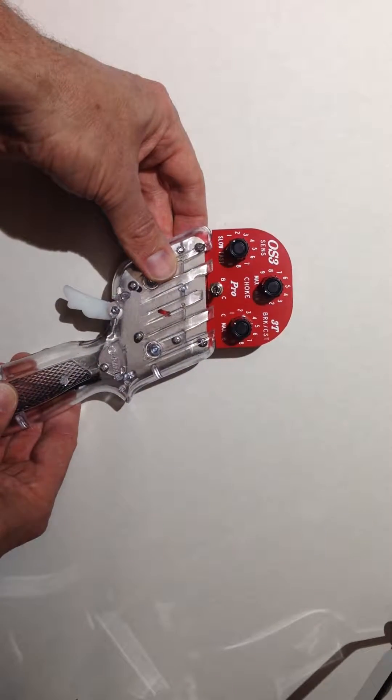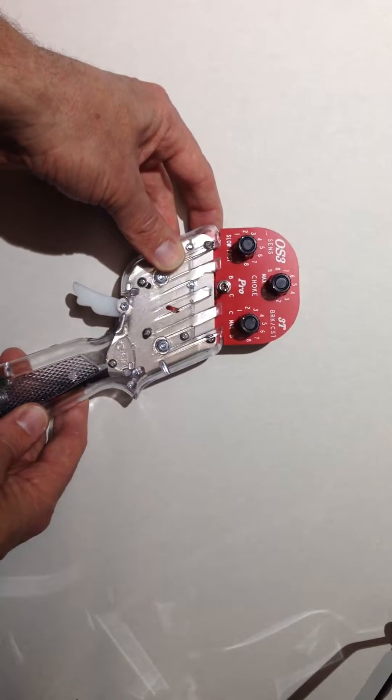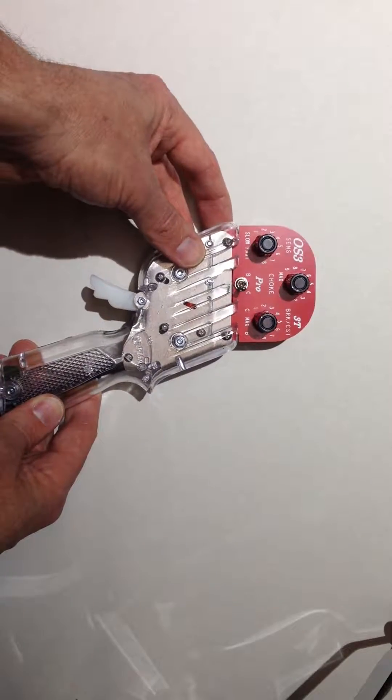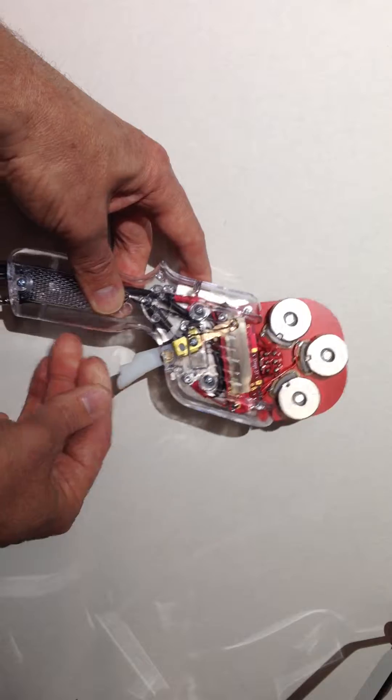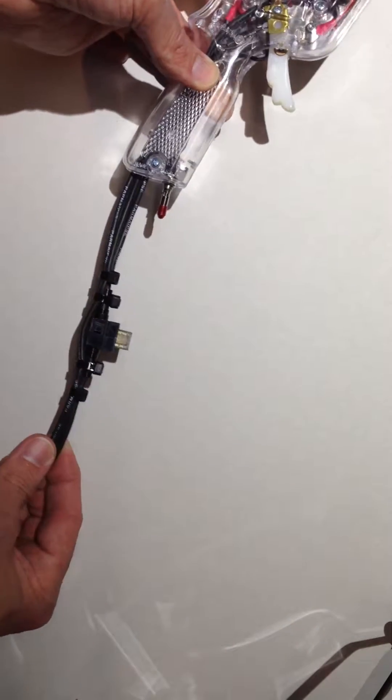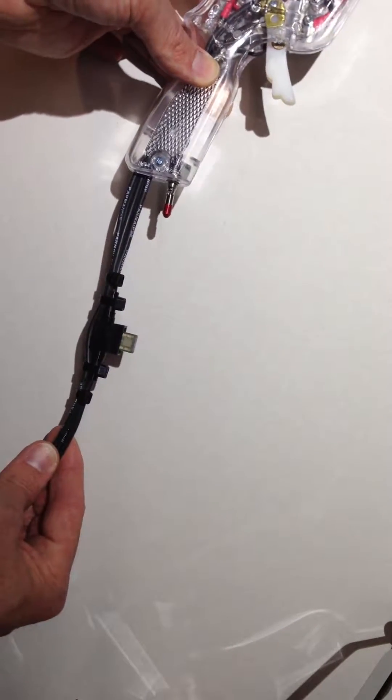This is the OS3 Pro Series electronic controller. It's based on the Parma design, housed in a Parma handle, Parma trigger, and utilizes Parma's super flexible 14 gauge silicone wire.